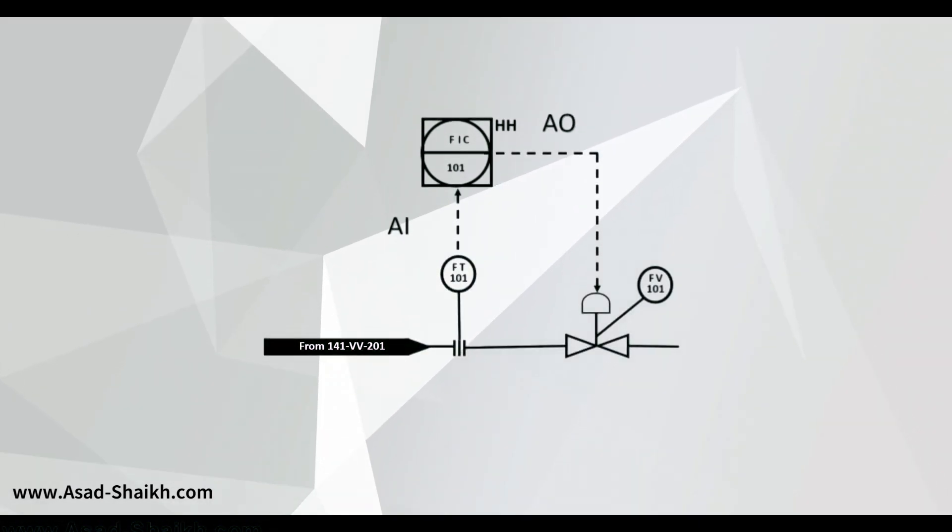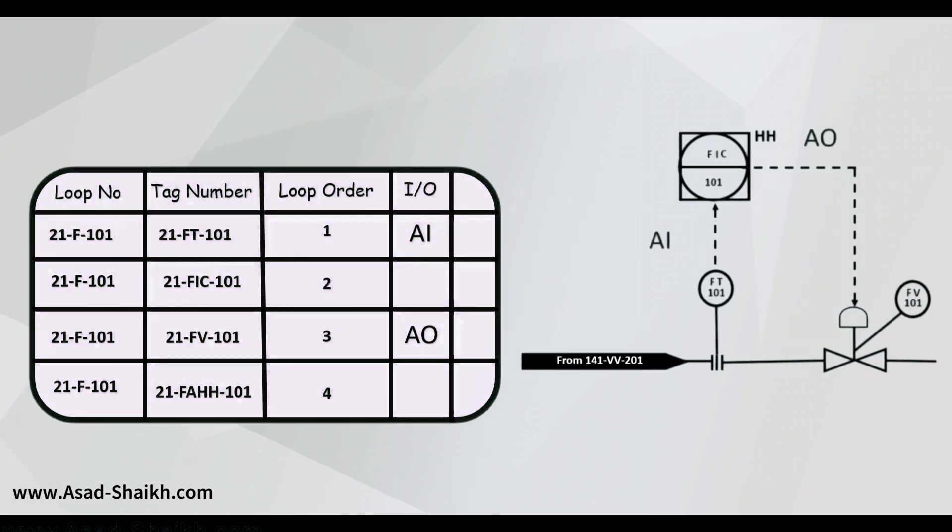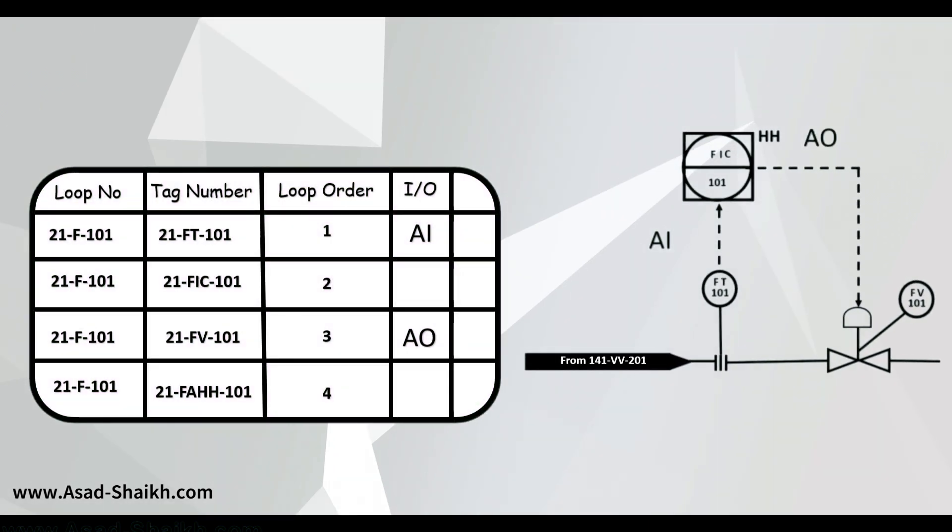We are already clear that the transmitter will give an analog signal which is generally 4 to 20 milliampere which goes to your control system. From a control system an analog signal of 4 to 20 milliampere will go to your control valve. Now we document these I/Os into the instrument index.